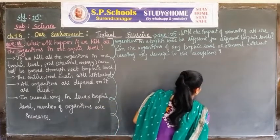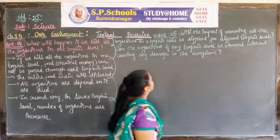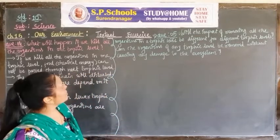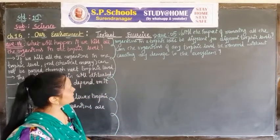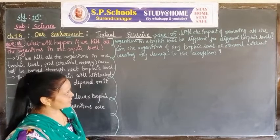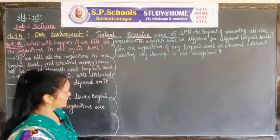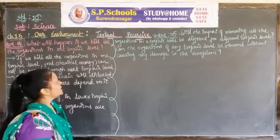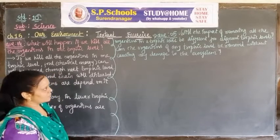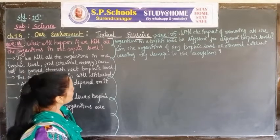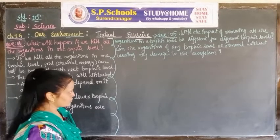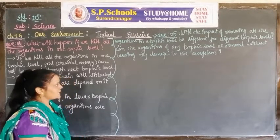Question five: Will the impact of removing all the organisms in a trophic level be different for different trophic levels? Can the organisms of any trophic level be removed without causing any damage to the ecosystem?